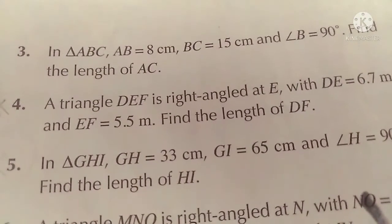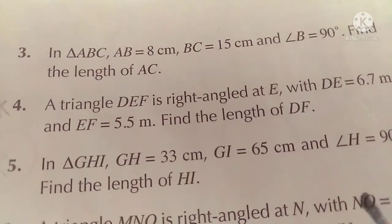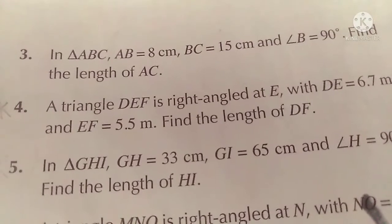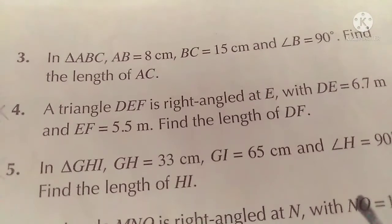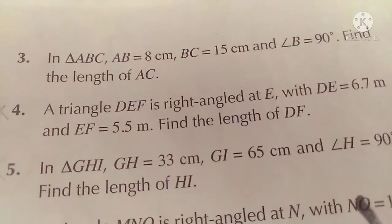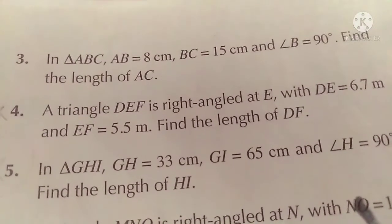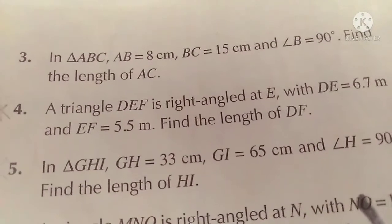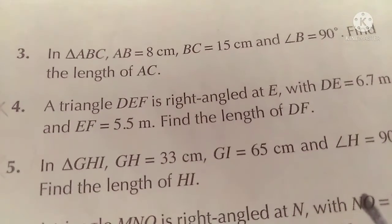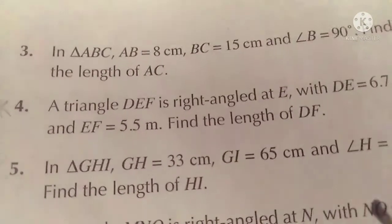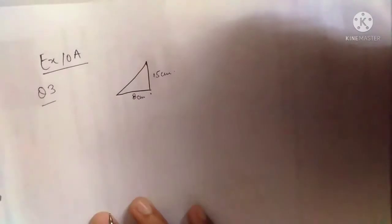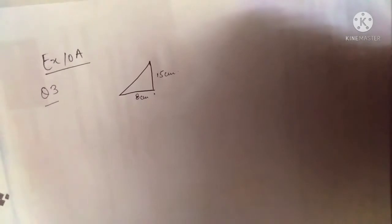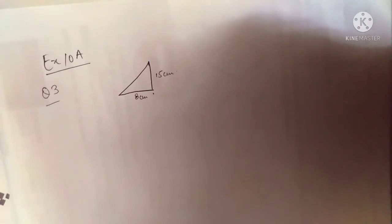Students, question number three is: in triangle ABC, AB is equal to 8 centimeters, BC is equal to 15 centimeters, angle B is equal to 90 degrees. Find the length of AC. So first we will draw this right angle triangle.